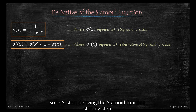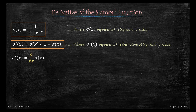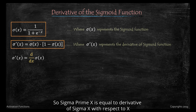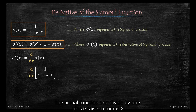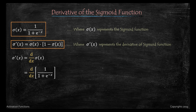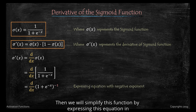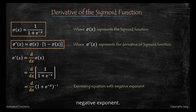Let's start deriving the sigmoid function step by step. Sigma prime(x) is equal to the derivative of sigma(x) with respect to x. Next, we substitute the actual function: 1 divided by 1 plus e raised to minus x. Then we simplify this function by expressing the equation in negative exponent form.